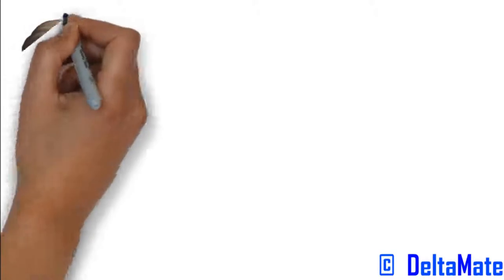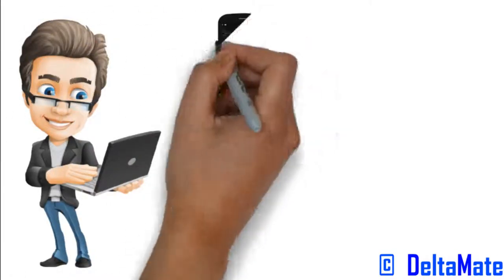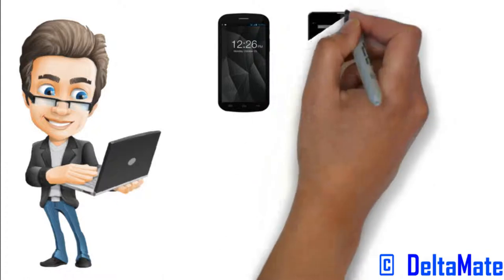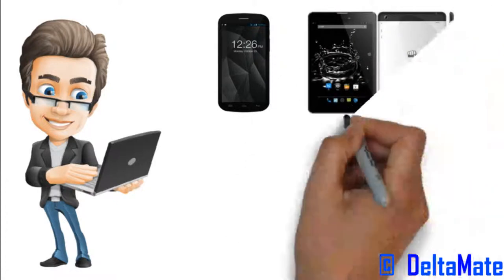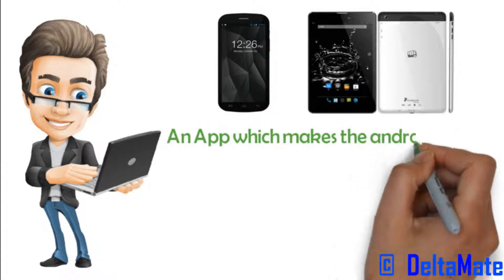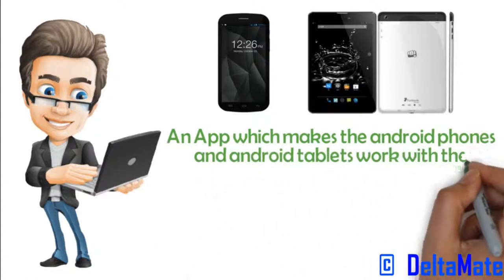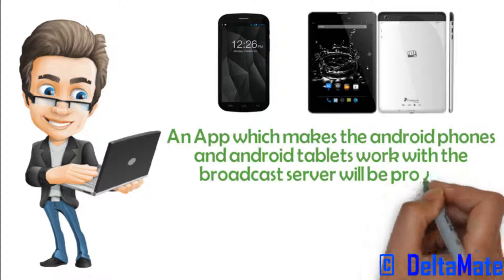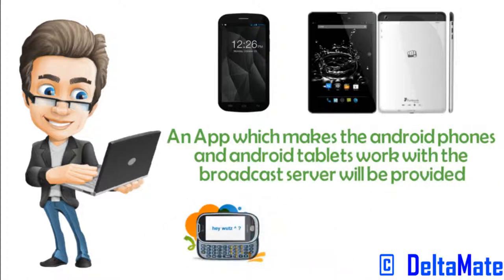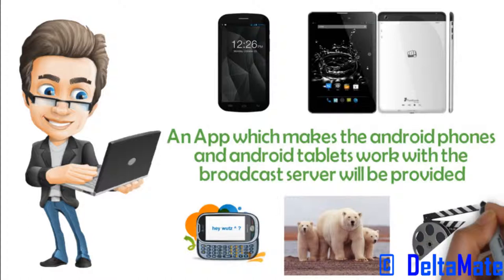Connectivity to smart devices. Smart devices like Android mobile phones and Android tablets shall be provided by the client. An app which makes the Android phones and Android tablets work with the broadcast server will be provided. Text messaging, pictures, slideshows, and videos sent from the broadcast server will be displayed on these devices.